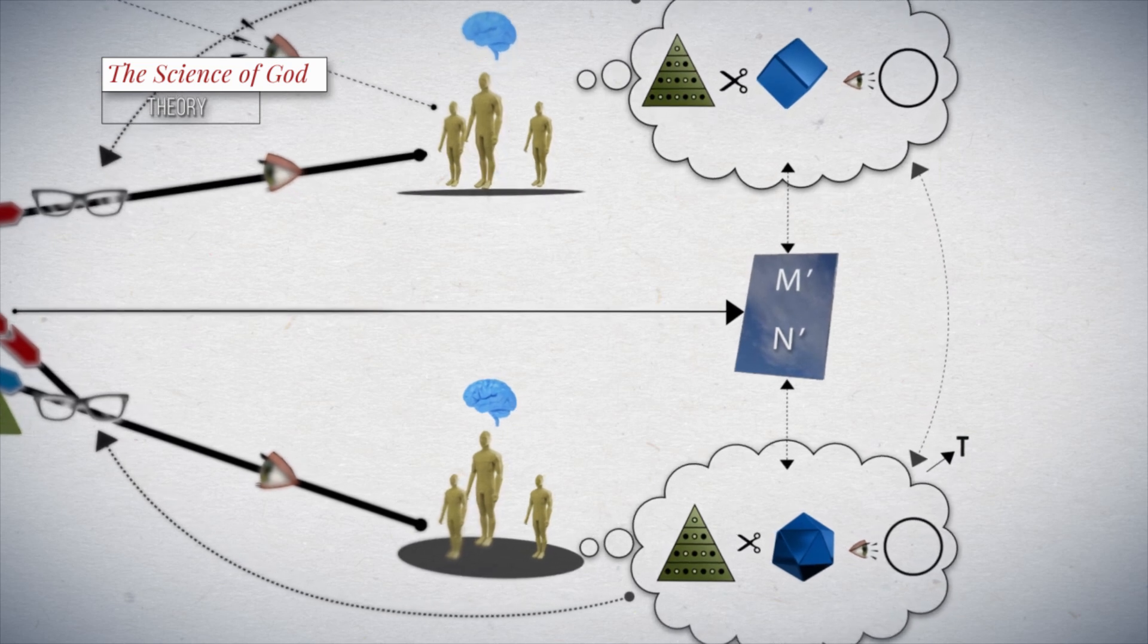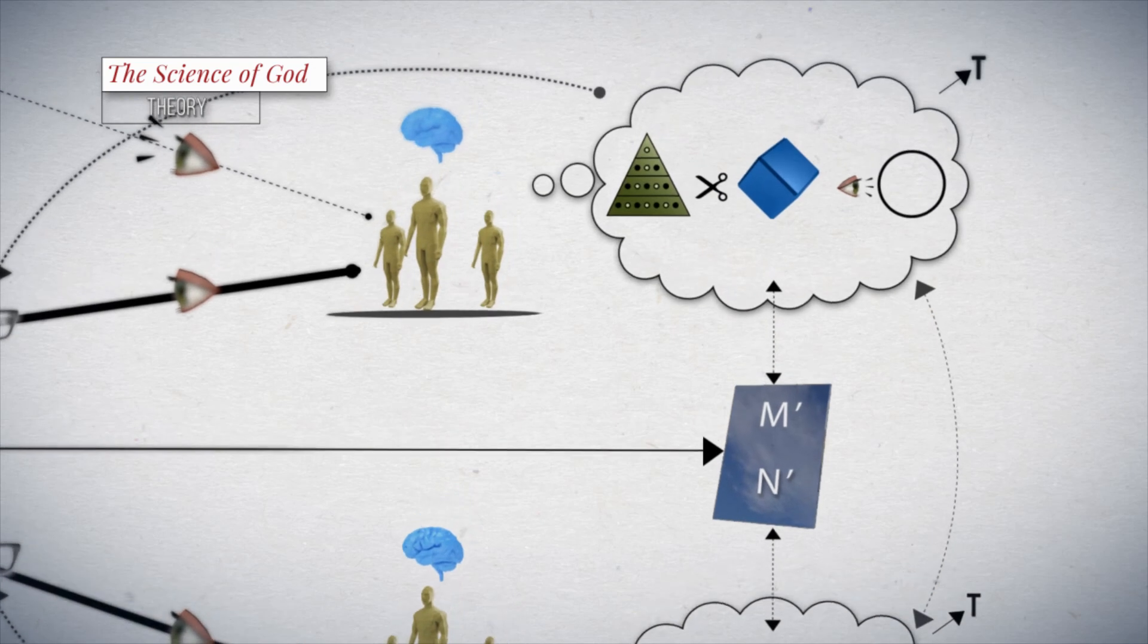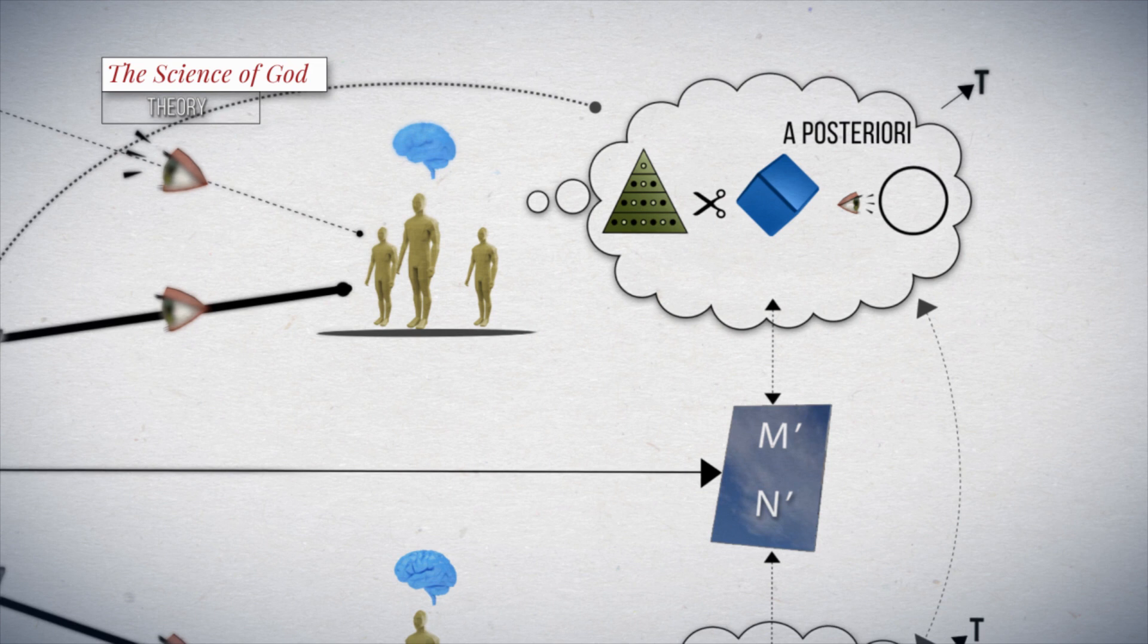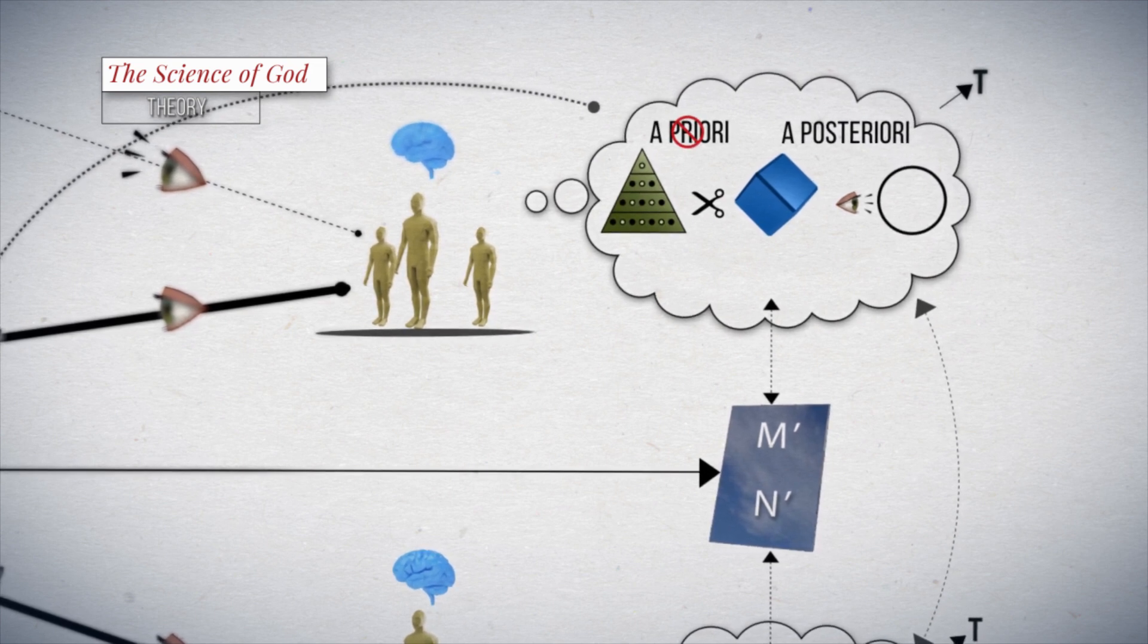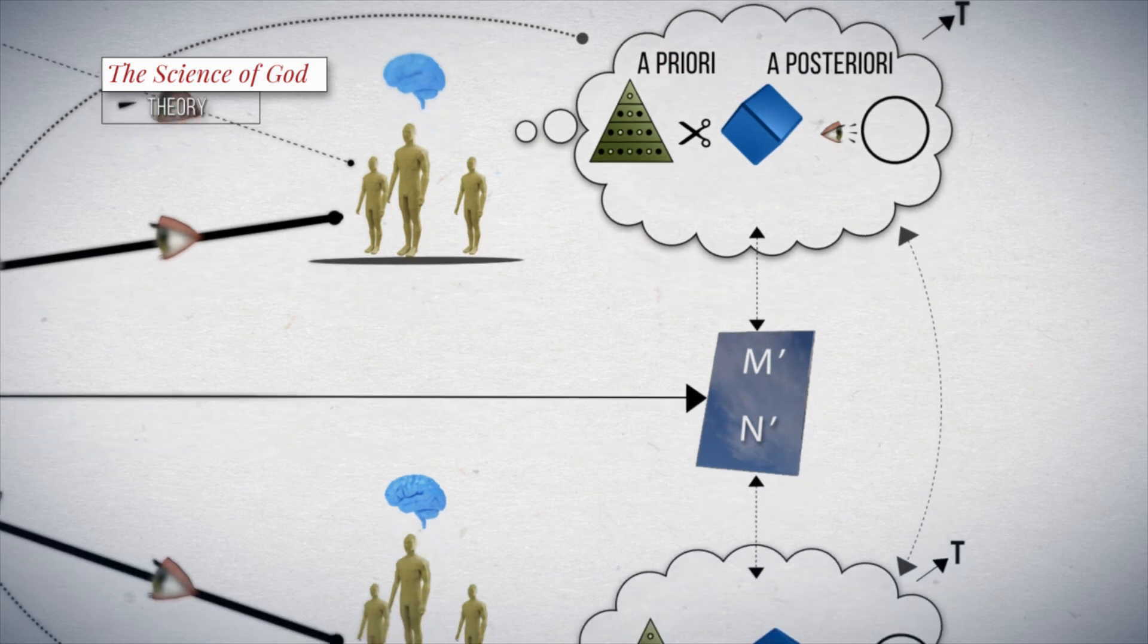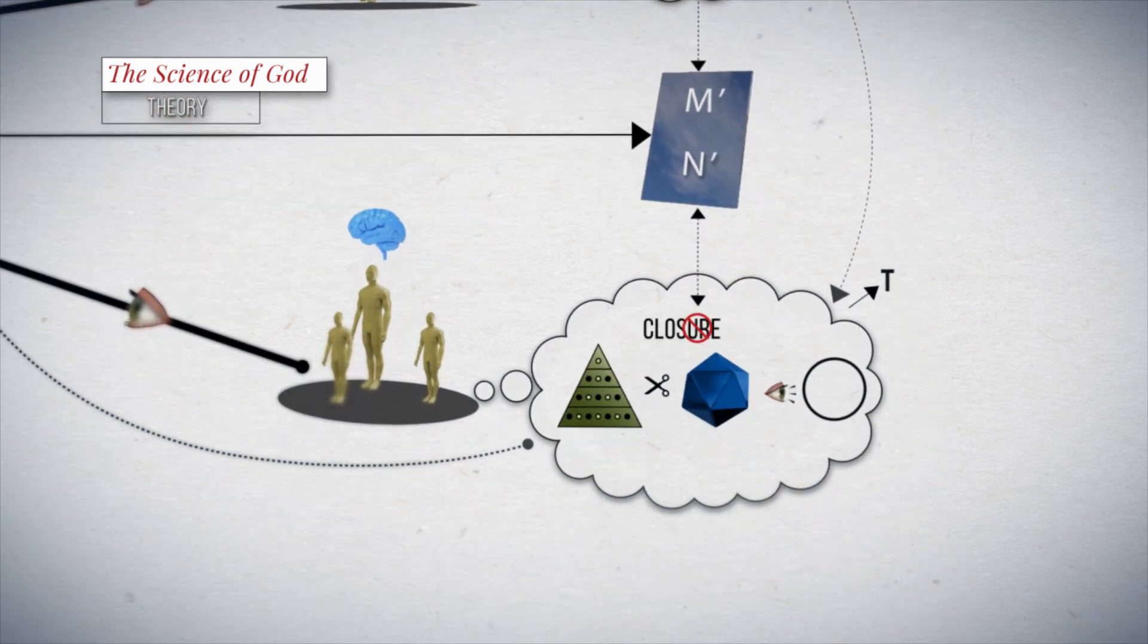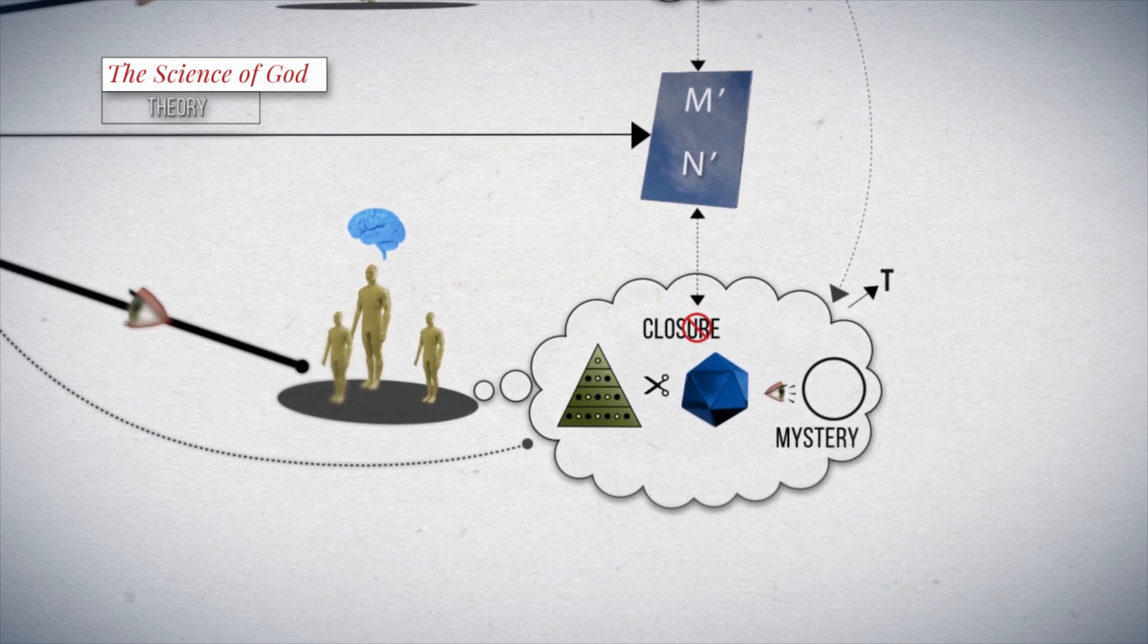McGrath says that the metaphysical considerations should be made a posteriori as a form of discussion of theoretical implications and not a priori as presuppositions of the theorizing process. Metaphysics, then, does not lead to an early theoretical closure, but to a theoretical opening to the mystery of the complex coherence of reality.